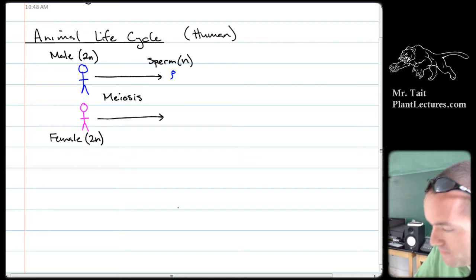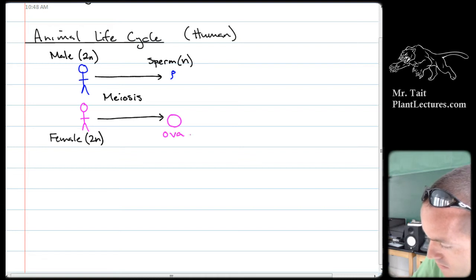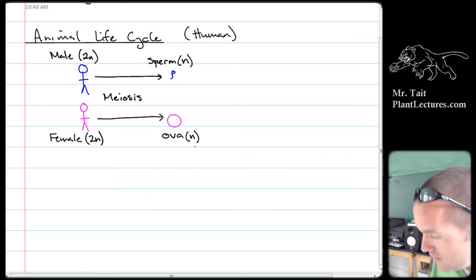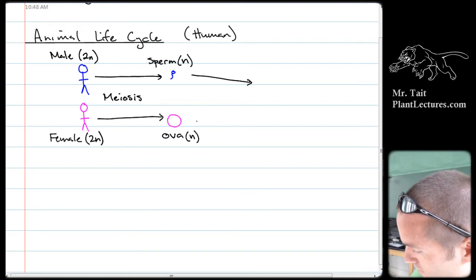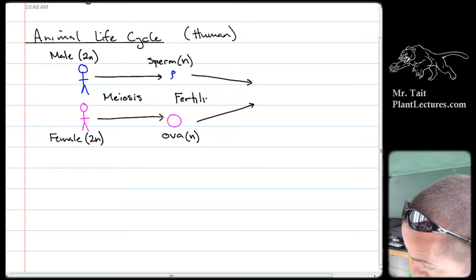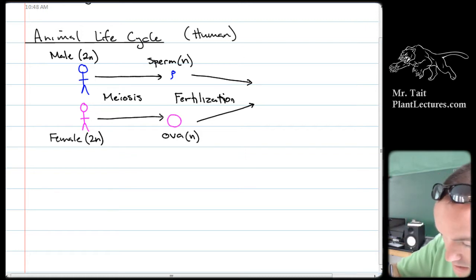Sperm is n — haploid. Females have cells called primary oocytes, and those primary oocytes go through meiosis to form what's called ova, which is also n. Sperm cells and egg cells, or ova, combine together in a process called fertilization to create a diploid single cell called a zygote.